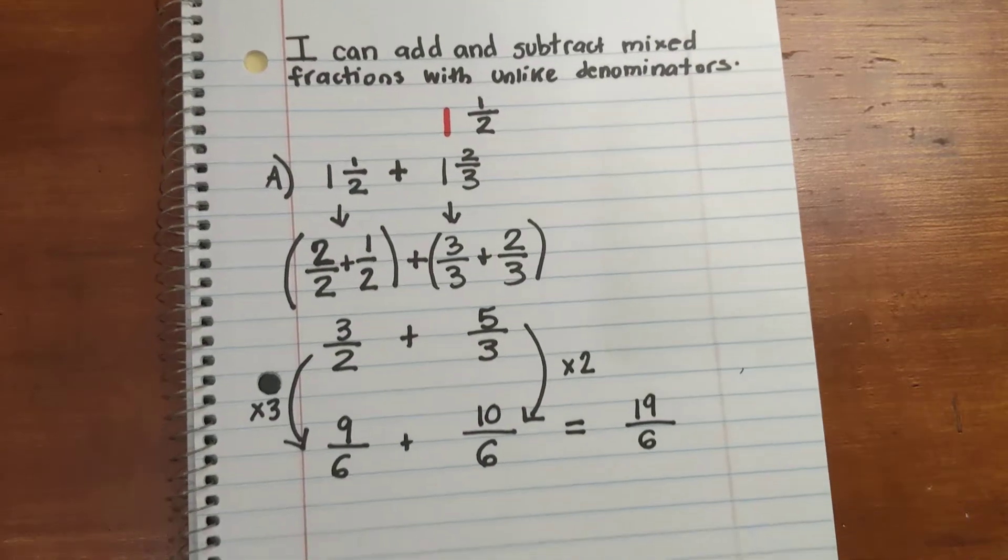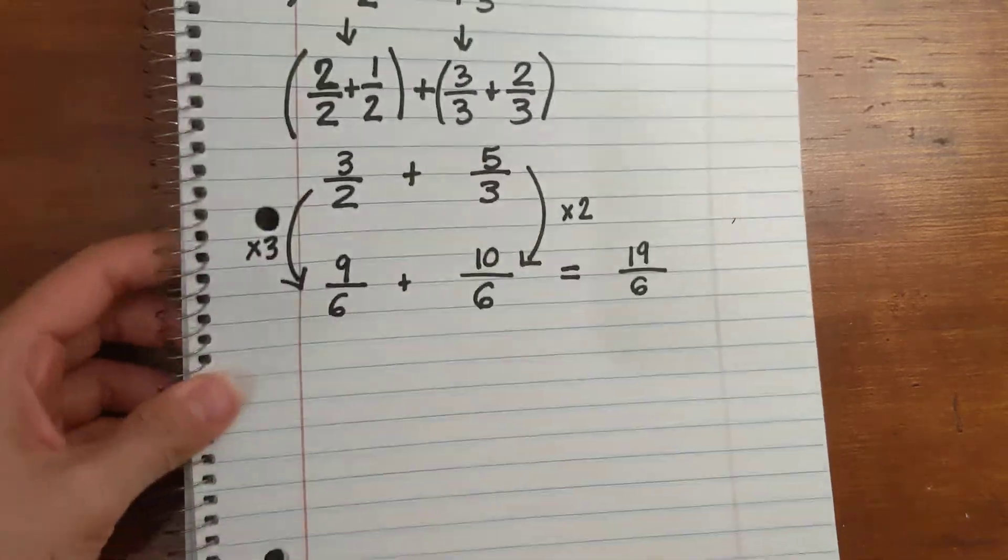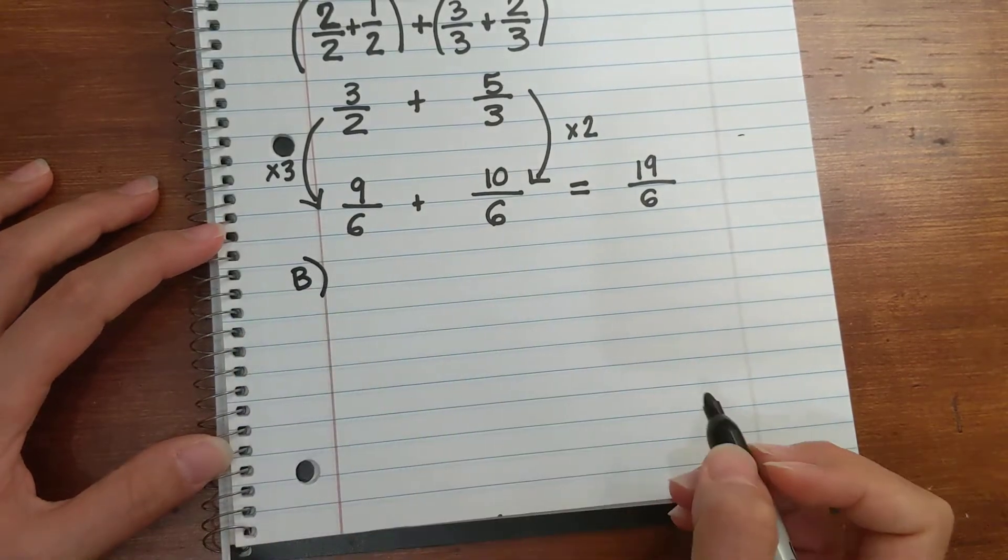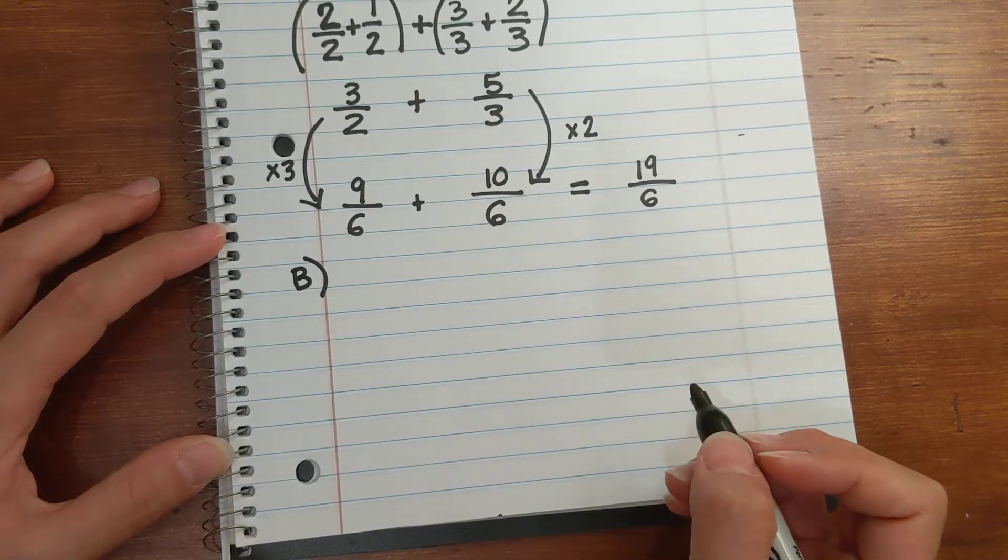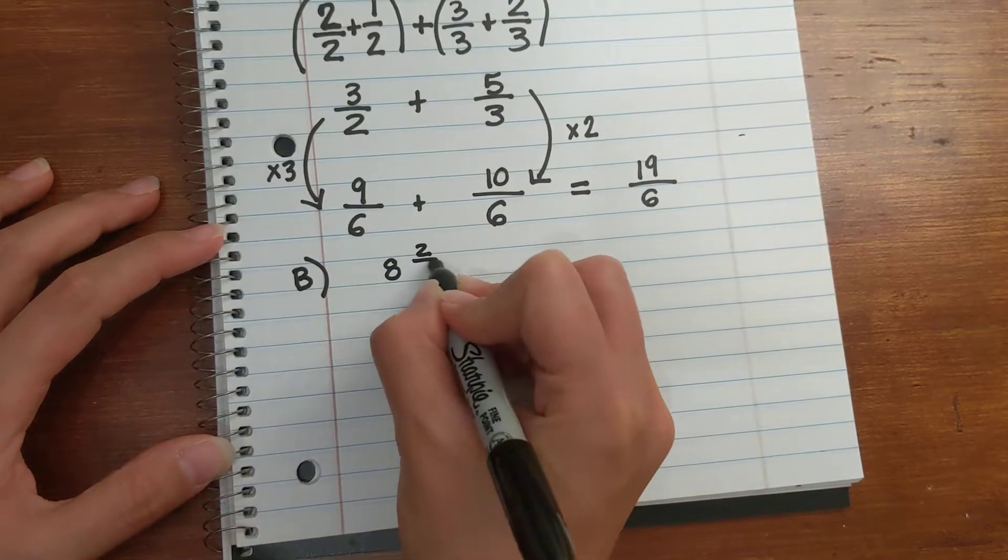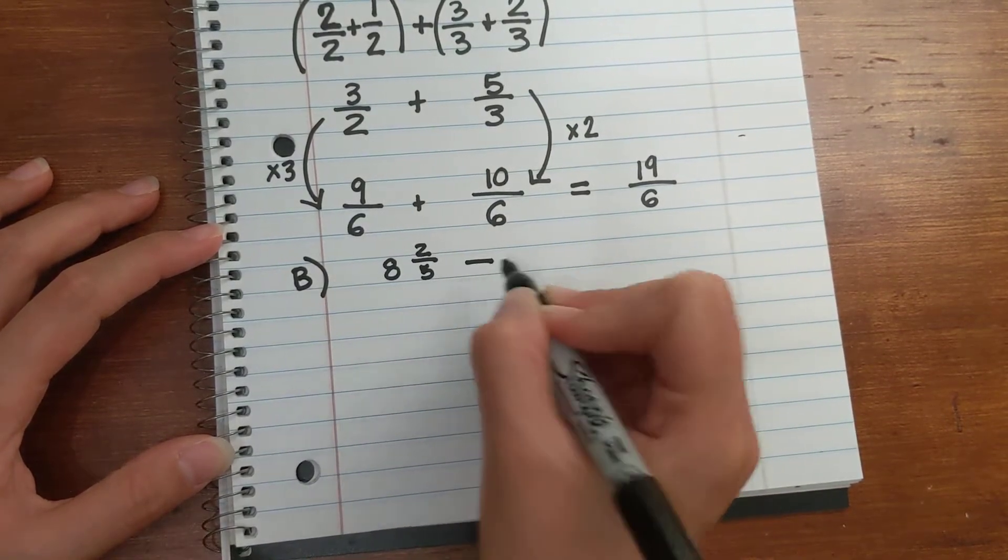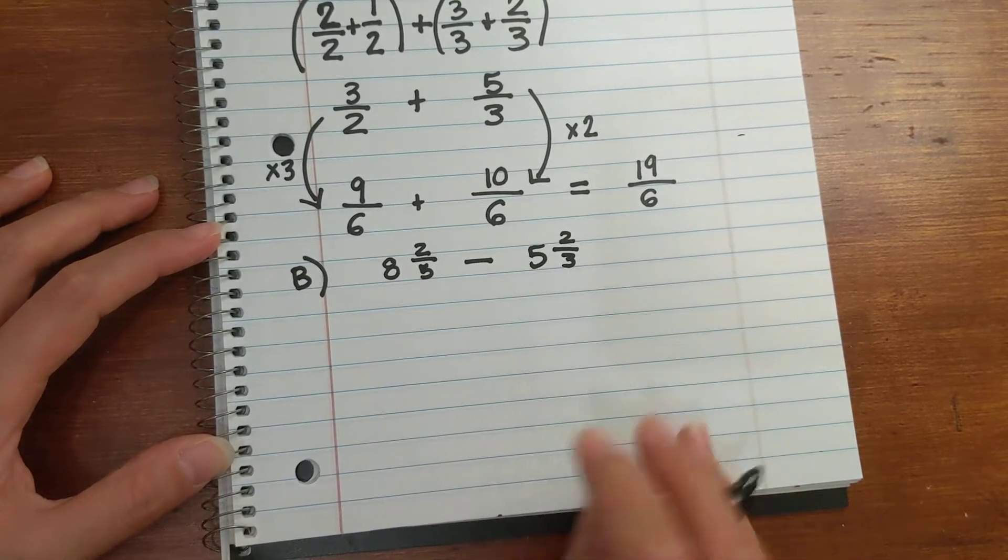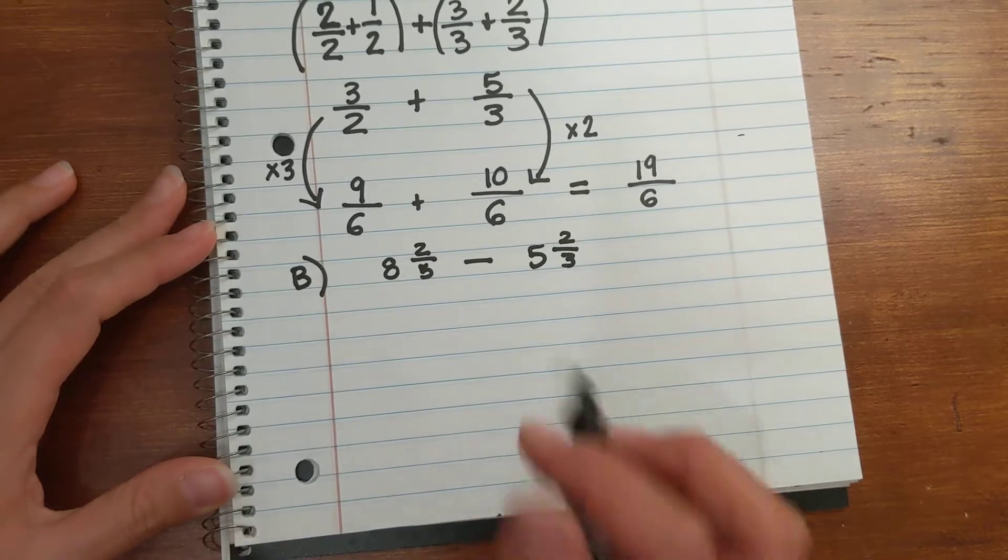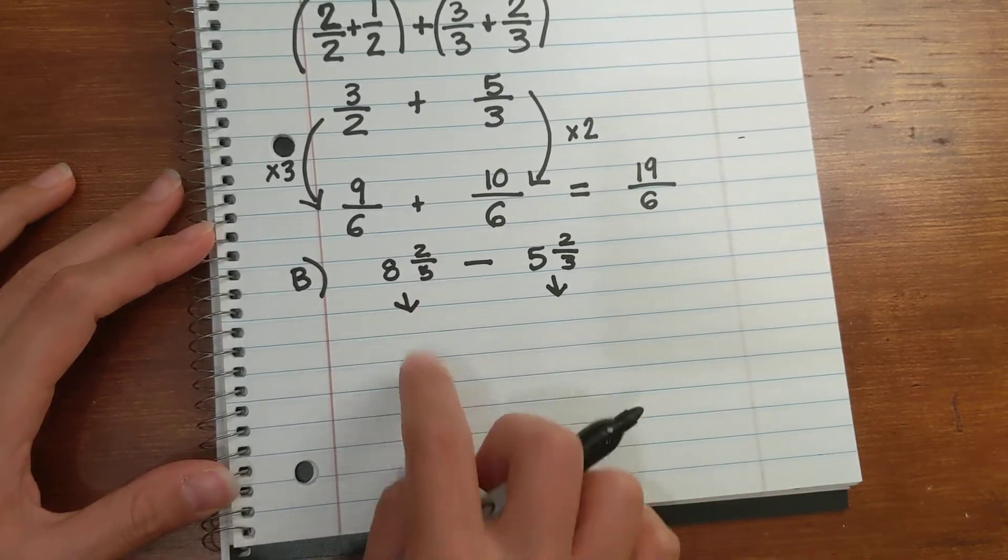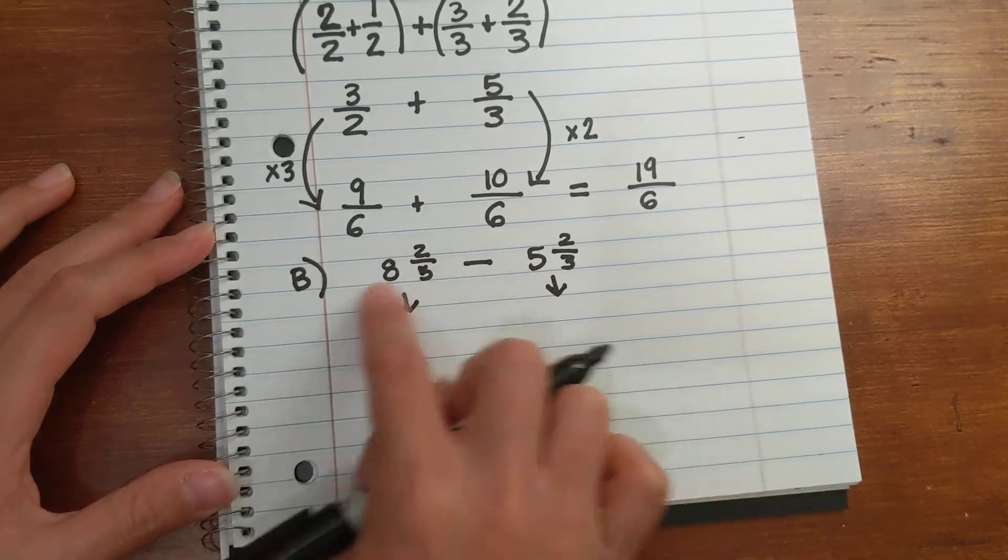All right, we're going to try one more, this time with subtraction, using the same methods. So B - this time we'll look at some larger numbers. So we have 8 and 2 fifths minus, my verb, minus 5 and 2 thirds. Okay, so first things first, I'm going to rewrite these as two separate fractions. Now I have a whole number and a fraction, and I'm going to rewrite my whole numbers as fractions.